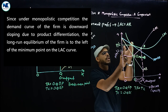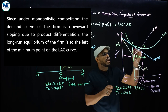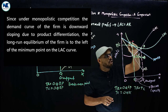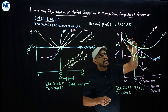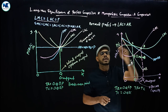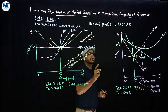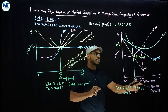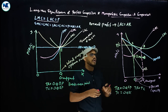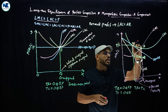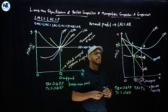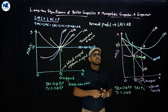The ideal output is Q1, and the actual output is Q. The difference — the excess capacity — is a negative feature associated with monopolistic competition, representing misallocation of resources. The equilibrium under monopolistic competition lies to the left of the minimum point of the long-run average cost — on the falling portion of LRAC. This is the concept of excess capacity.